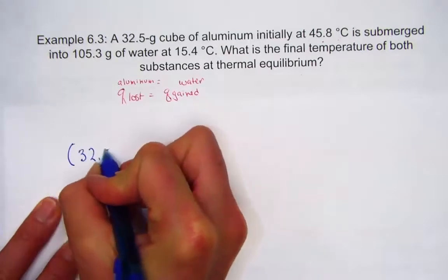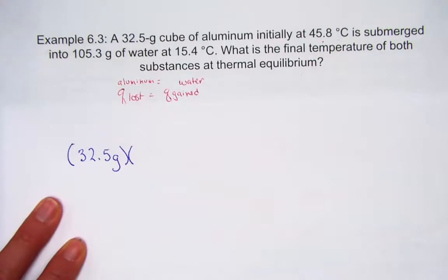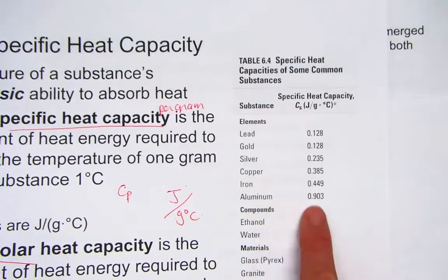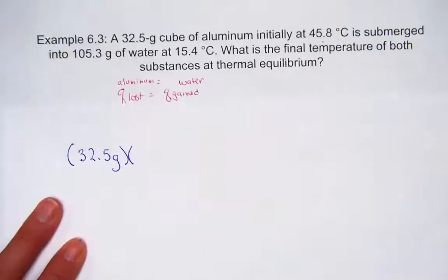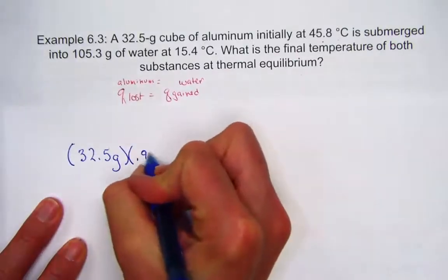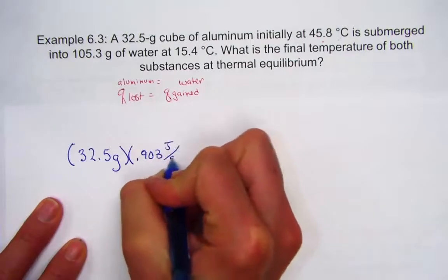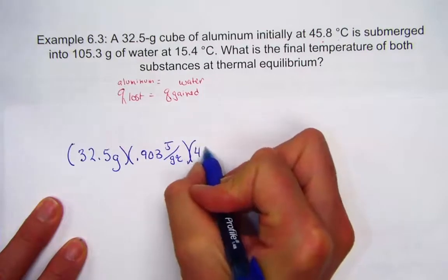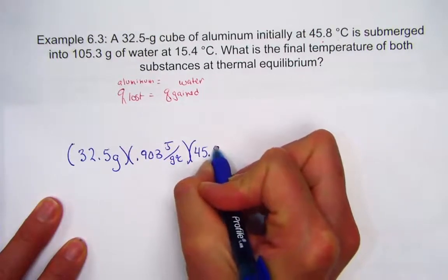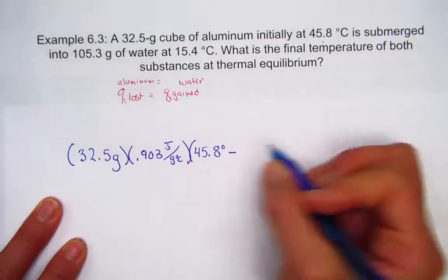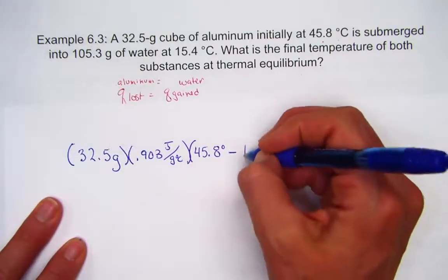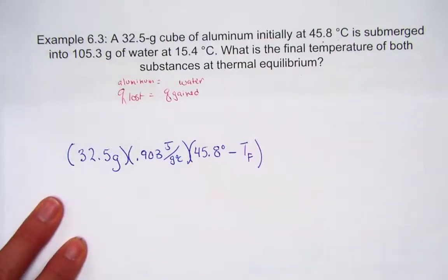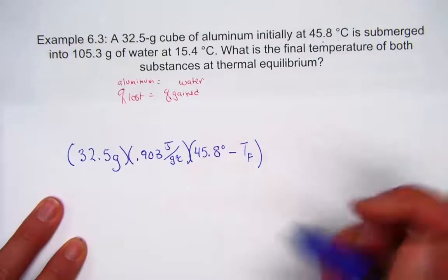We have a 32.5 gram piece of aluminum metal. Aluminum has a specific heat constant we look up on our table, 0.903. The temperature the aluminum started at is 45.8 degrees. It is going to go down to reach the equilibrium we'll call the final temperature, T sub f to represent final temperature. MC delta T for aluminum...